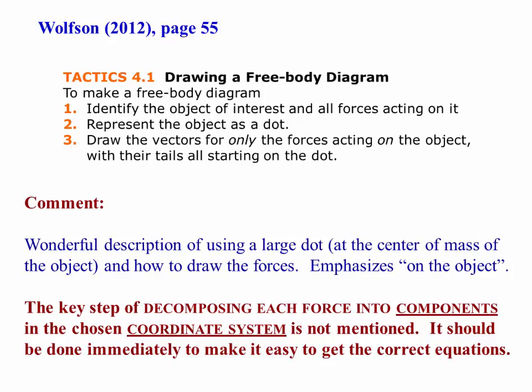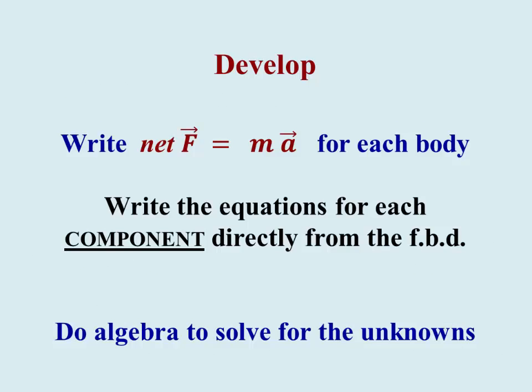Our textbook gives a very good description of this process. Identify the object of interest, replace it as a dot, draw the vectors for only the forces acting on that object, tails on the dot. I really like that emphasis about on the object so that we're looking at that body and that body alone, but it doesn't emphasize the key step that each force needs to be decomposed into components in your chosen coordinate system. That step needs to be done at the same time while you're drawing the free body diagram. If you do it that way, you'll get the correct equations quicker and more accurately than any other approach.